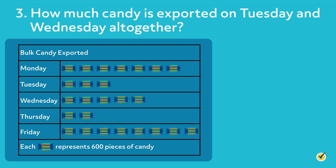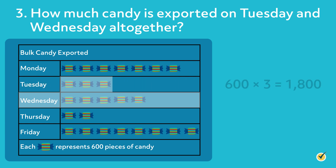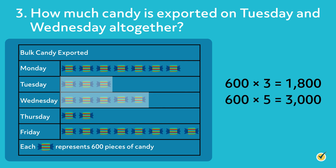How much candy is exported on Tuesday and Wednesday altogether? First, find the total amount of candy exported on Tuesday and Wednesday. Remember that each symbol represents 600 pieces of candy. Since there are three symbols next to Tuesday, multiply 600 times 3, which equals 1,800. Since there are five symbols next to Wednesday, multiply 600 times 5, which equals 3,000. To find the total amount exported on both days, add the Tuesday and Wednesday amounts. 1,800 plus 3,000 equals 4,800. So 4,800 pieces of candy are exported on Tuesday and Wednesday together.